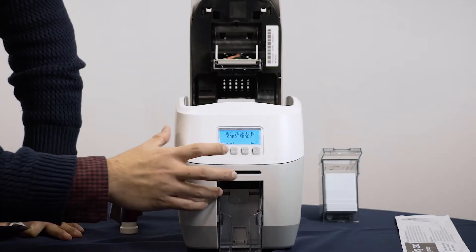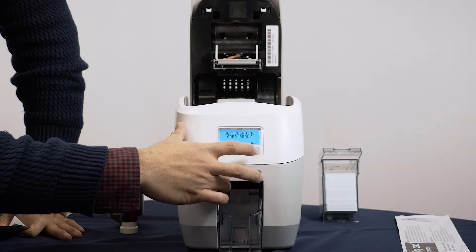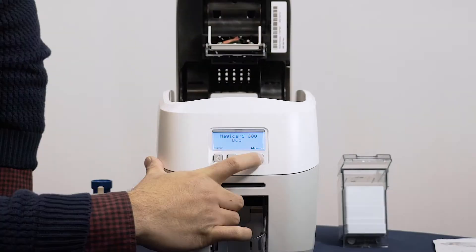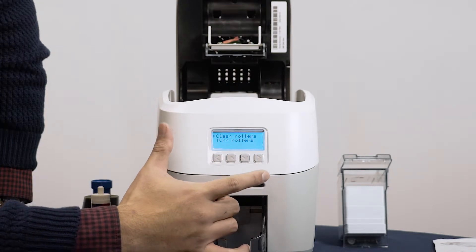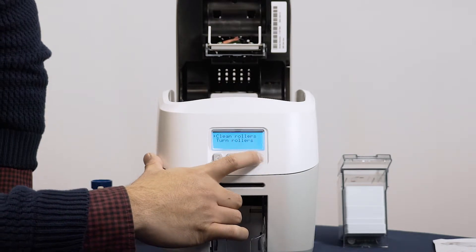With the home screen showing on the display, click Menu. This will be the right hand button under your display. With the Clean Rollers option selected, click the right arrow button.